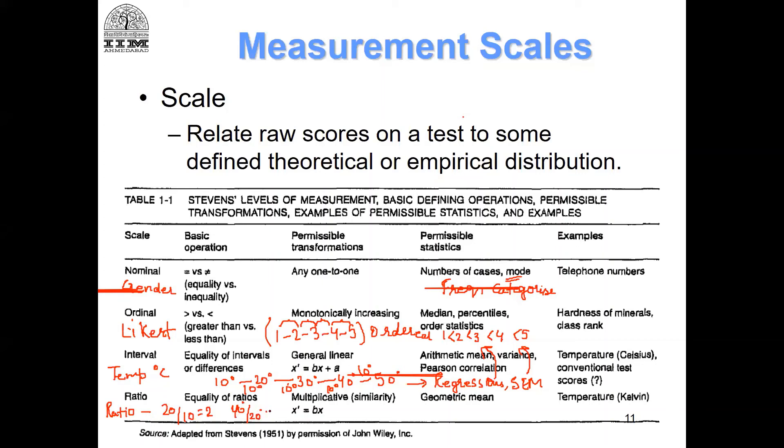Here we cannot say that forty is twice as hot as this and twenty is twice as hot as ten, and these ratios may not be meaningful. You cannot take ratios in an interval scale.